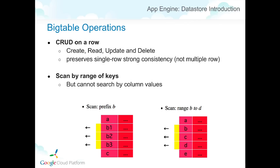Bigtable supports CRUD — create, read, update, and delete operations. It has strong consistency, but not across multiple rows, and it supports scans by range of keys. For example, you can retrieve rows with the prefix 'B', or get rows with keys ranging from B to D. However, what Bigtable cannot do is search by column values — you can't retrieve rows where a column has a certain value. This is a limitation of Bigtable.